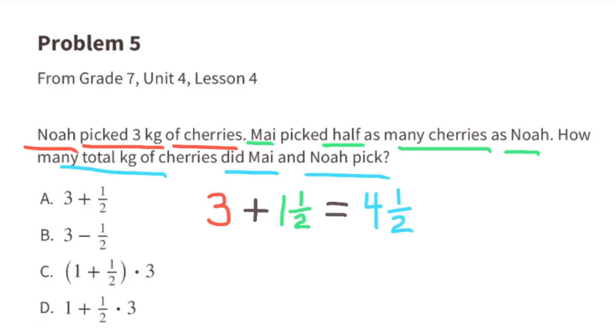Option a: 3 plus one-half equals 3.5, so that's not equivalent. Option b: 3 minus one-half equals 2.5, so that's not equivalent. Let's skip down to d.